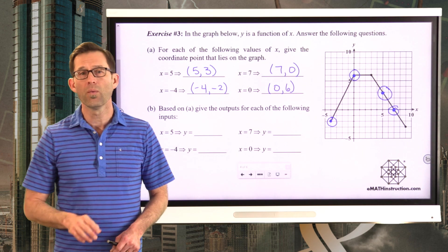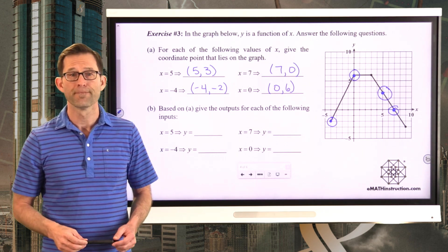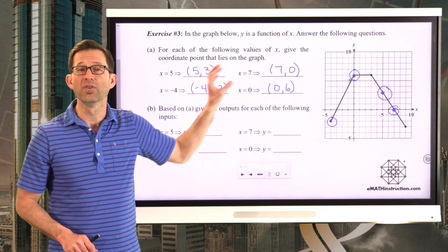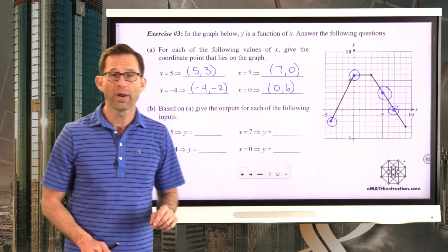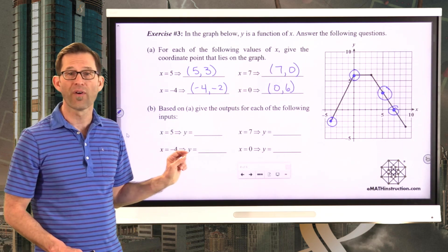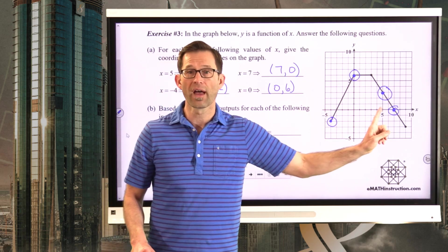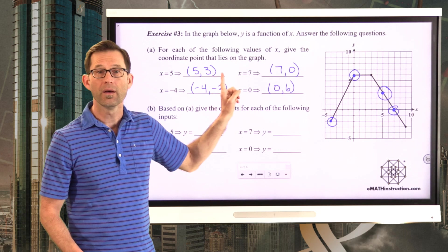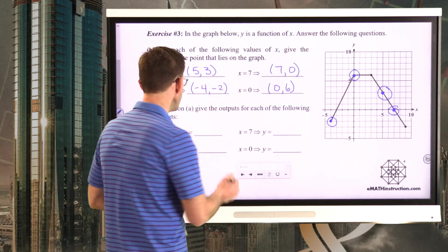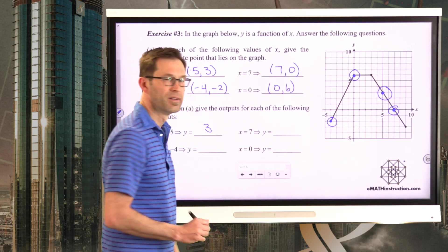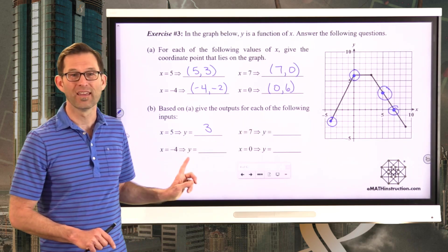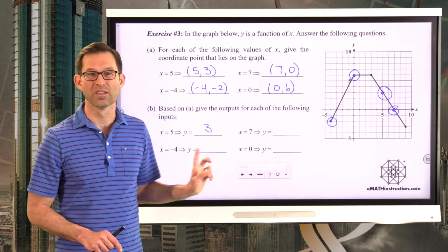All right. Now, what do we do exactly? Well, let's take a look at letter B. Based on A, give the outputs for each of the following inputs. So this was just a precursor. We're not going to be doing this a lot. The point is, if I said, what is the output when x is equal to 5? I would want you to go to the graph, go over to x equals 5, go up here and go, oh, that's the point 5 comma 3. The input is 5. The output is y equals 3. So the rest of these are quite easy. Pause the video now and put the outputs into each one of these blanks for these particular inputs.